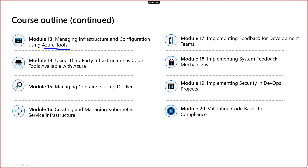That is called infrastructure configuration. Whatever we've seen in build and release involves deploying applications, but we need to deploy into infrastructure available in Azure. Infrastructure creation and management are also part of DevOps. If you want to create a hundred VMs, you're not going to create them one by one in the Azure portal — you'll use a tool that can automate and create a hundred VMs in minimal time. We'll touch base on third-party tools like Terraform, Chef, Puppet, and Ansible as part of infrastructure creation.